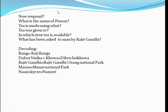Now respond to these questions. What is the name of the person? The name of this person is Ranga. Tea is made using what? Tea is made using kova and also Dabar Vatika oil. Tea was given to whom? Tea was given to Rajiv Gandhi. In which river is tea available? The entire Manas river. And what did Rajiv Gandhi ask the man? Aapka Naam Kyare.